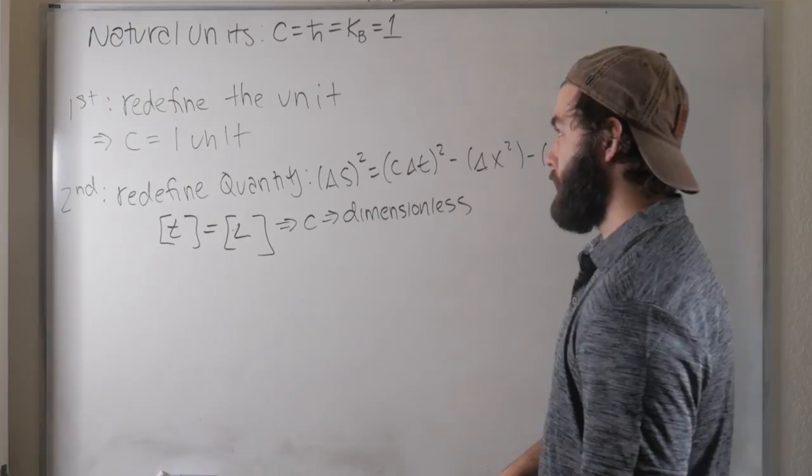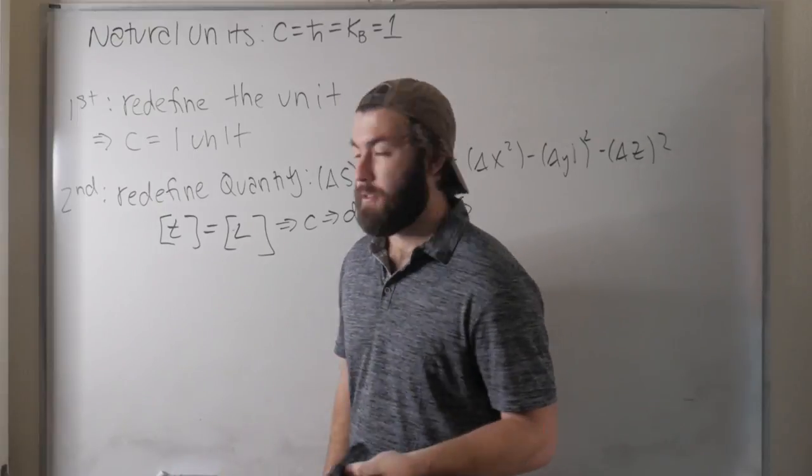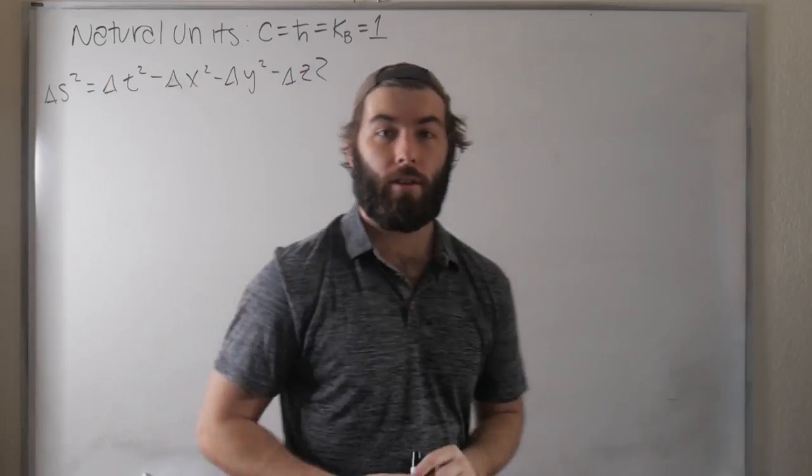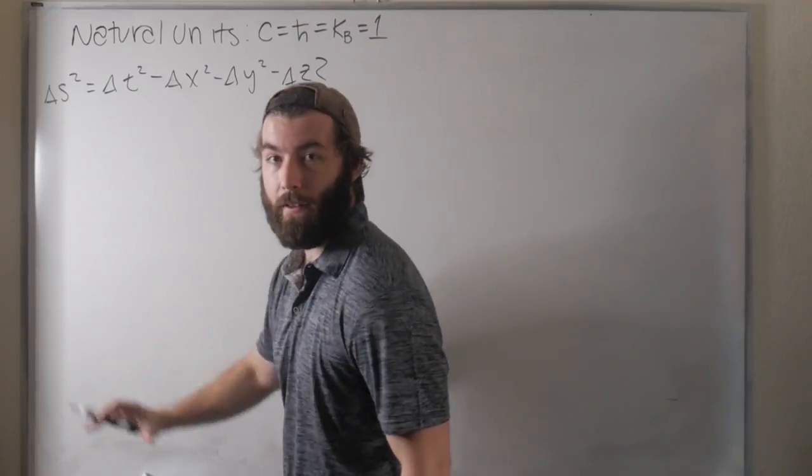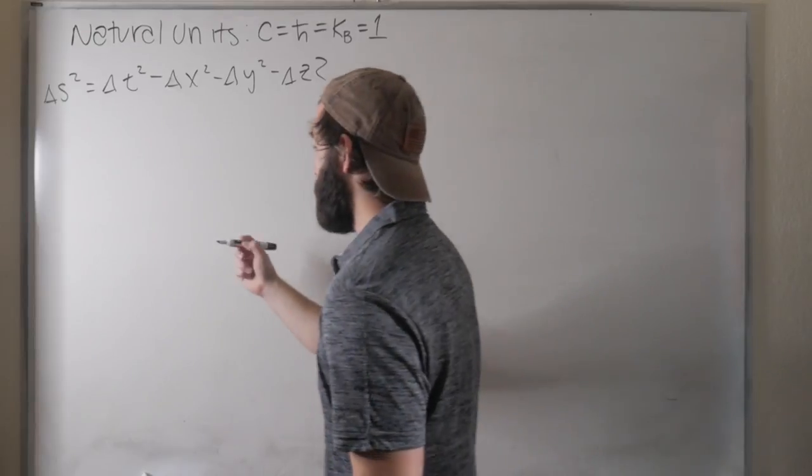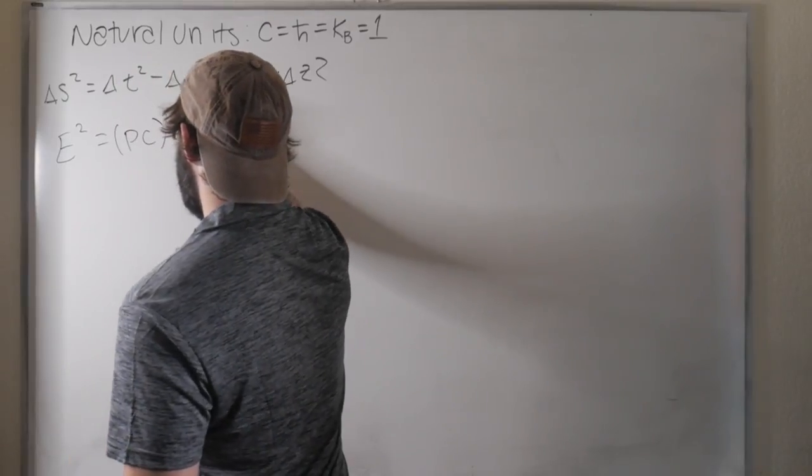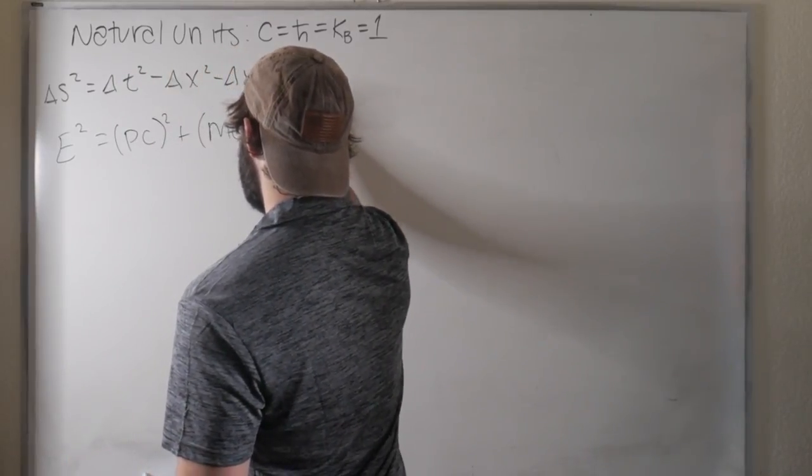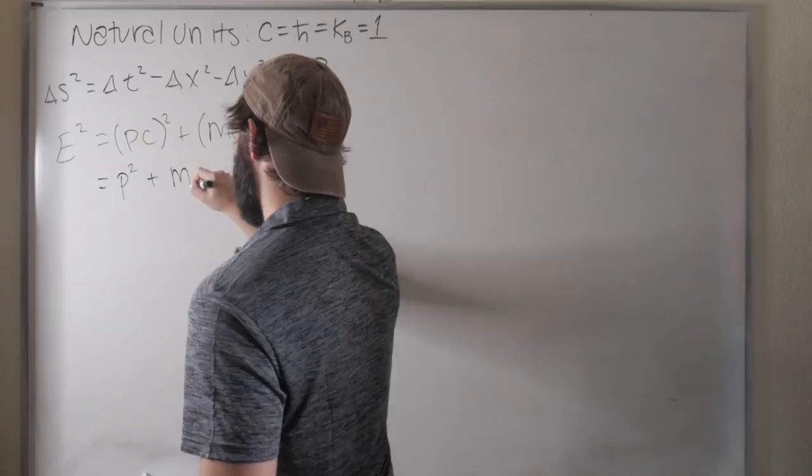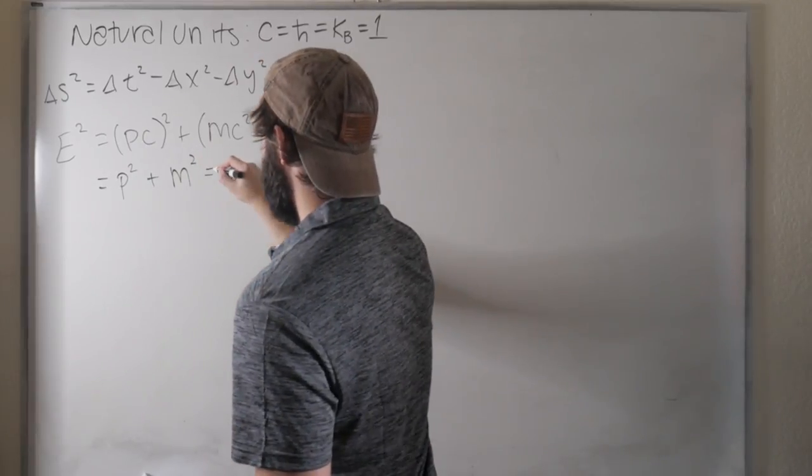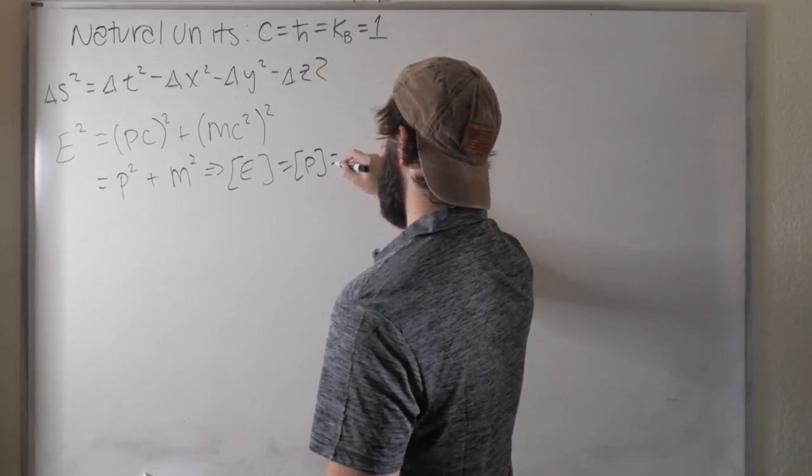But why go through the trouble of doing this in the first place? This is the procedure for doing the natural units, but why do we want to do it? It makes the equation simpler. So in these natural units, we have c normalized to one, and it's dimensionless, so we can just drop it from the invariant spacetime interval equation. And we can also do that for something like Einstein's energy relation. E squared is equal to p c squared plus m c squared squared. If c is equal to one, then this is just equal to the square of the momentum plus the square of the mass. And what that tells us is that in these natural units, energy has units of momentum, which has units of mass.